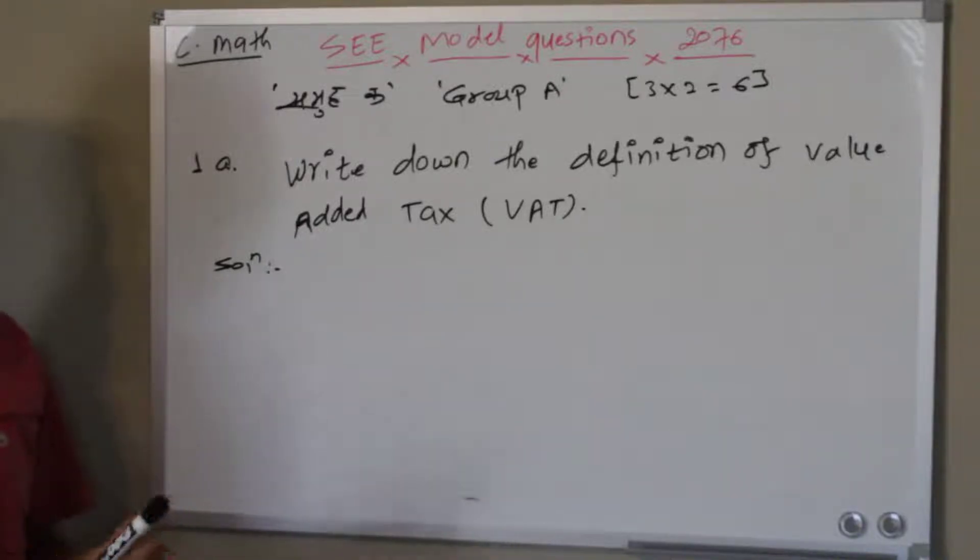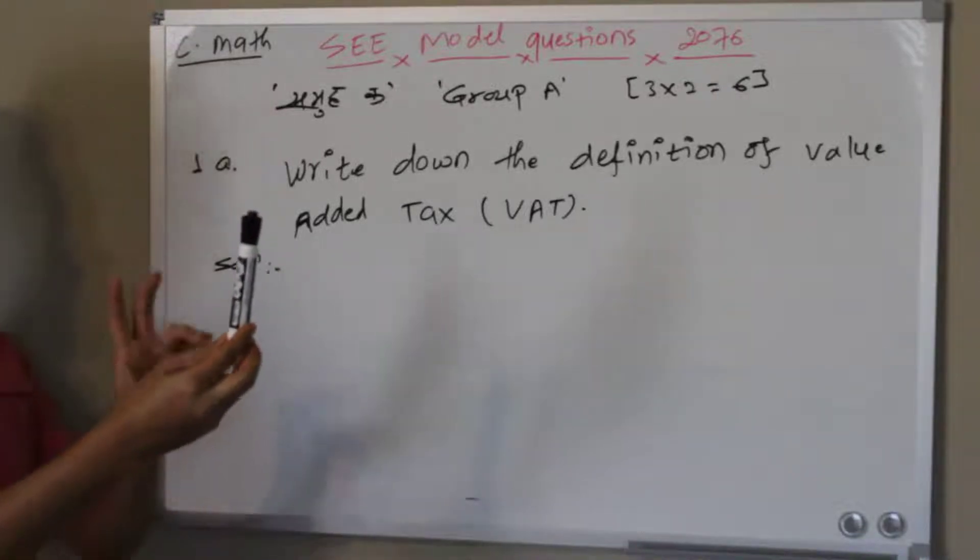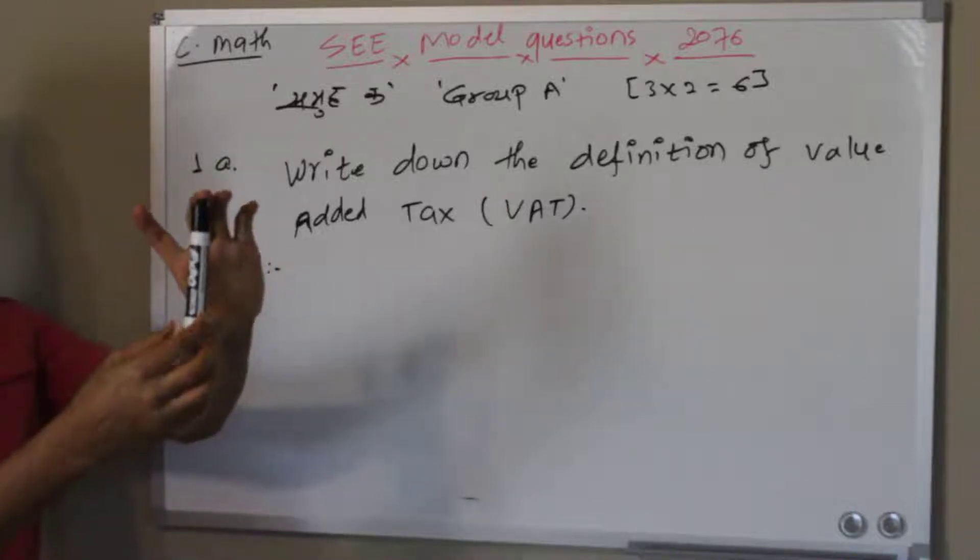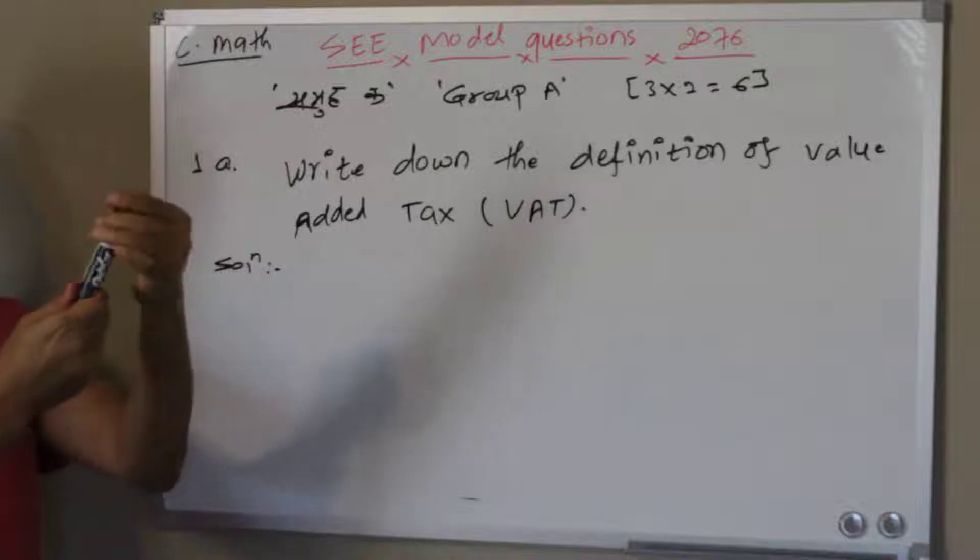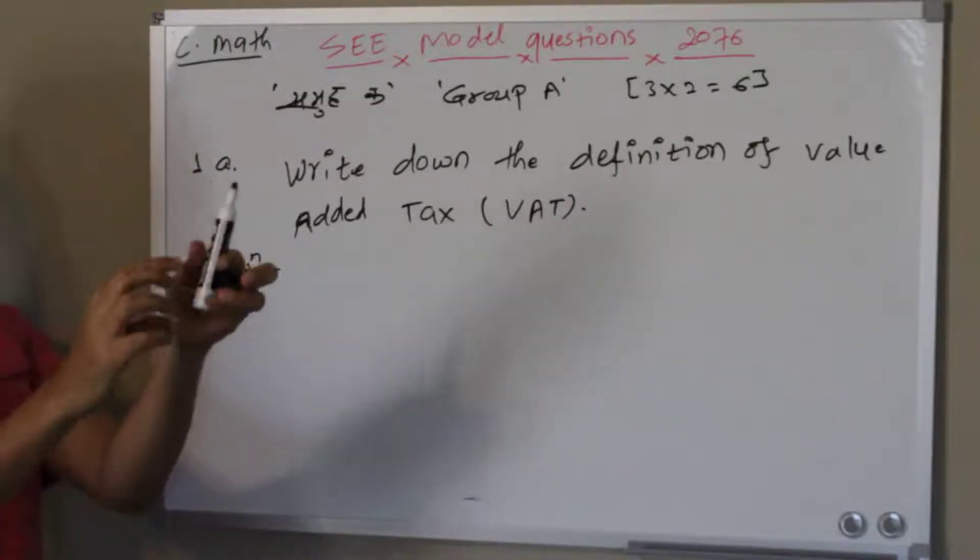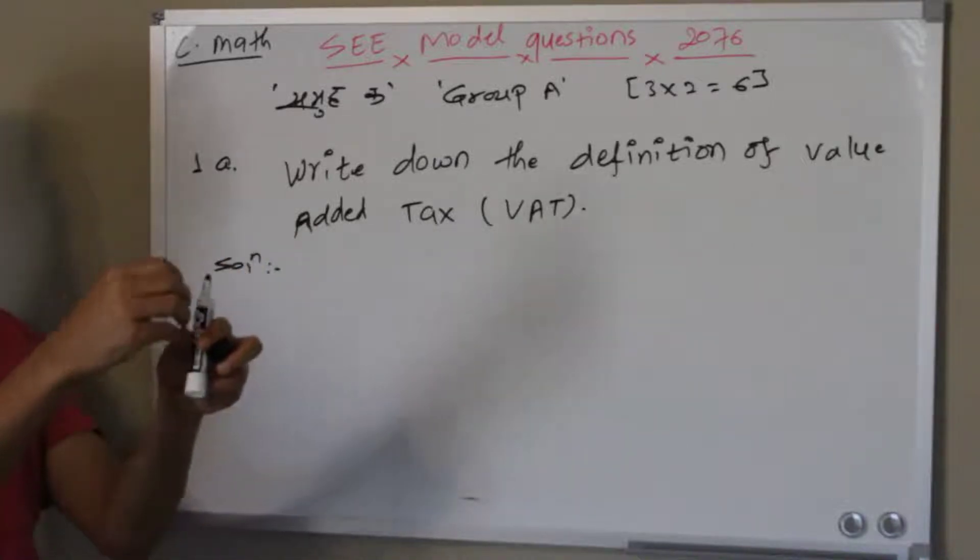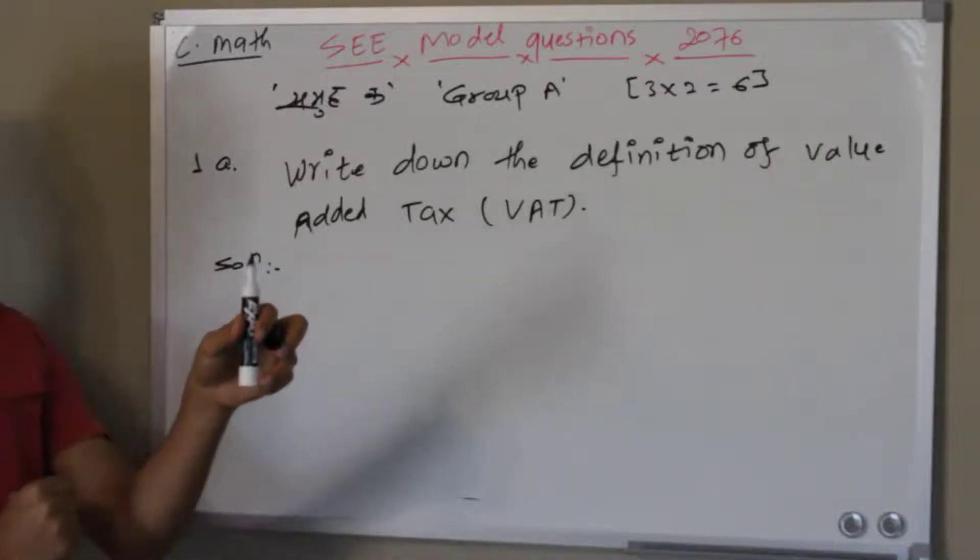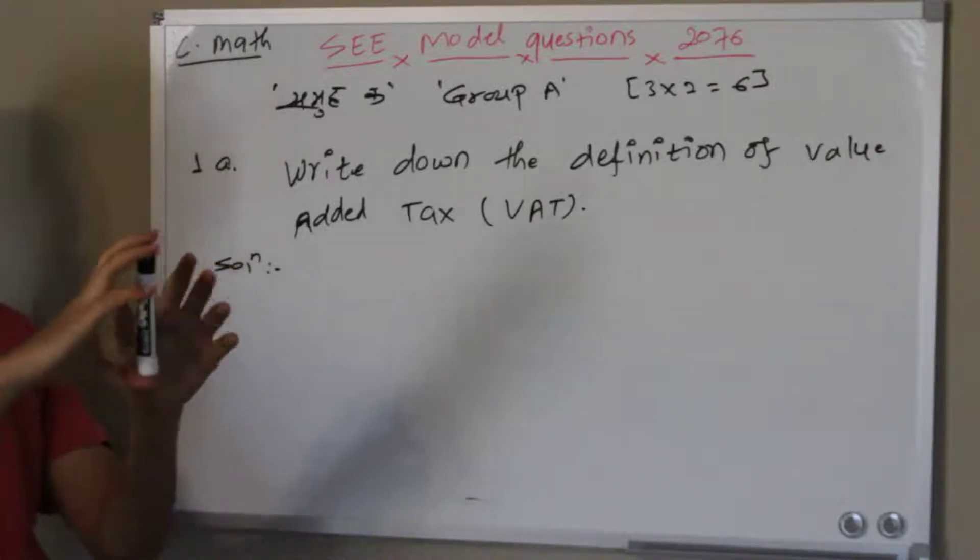Value-added tax means if I buy this marker, there are several things, raw materials, that are needed to be prepared for this sort of marker. For example, this plastic, this tip, these colors, and the ink that need to be put inside the marker. So whenever they buy this, when the company buys those kinds of raw materials, they have to pay the tax.